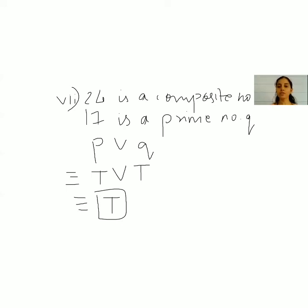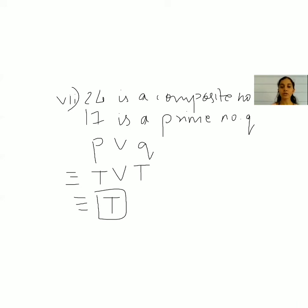We have finished three questions of Exercise 1.1, and two more questions remain for the next session. If you have any doubts, please ask. Please go through the tables for conjunction, disjunction, negation, implication, and biconditional, as we will need them for the next questions. Thank you — we will continue in the next session for Exercise 1.1.